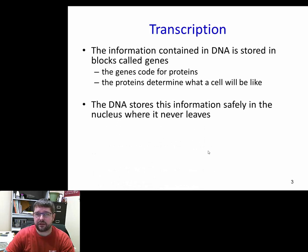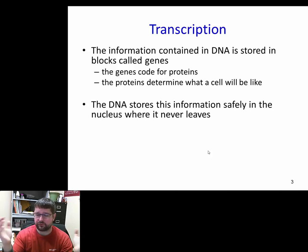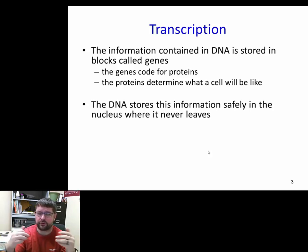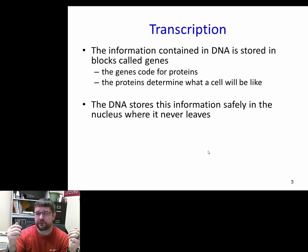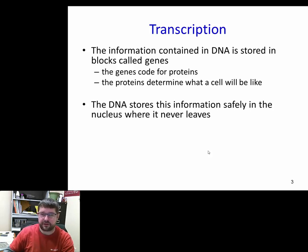DNA is a good storage molecule: it's double-stranded, often associated with proteins, nearly always associated with RNA, housed in its own membrane and separate from the rest of the cell in the nucleus for eukaryotes and the nucleoid region for prokaryotes. It's well protected, not likely to unravel on its own, and it can withstand high and cold temperatures. It never leaves the nucleus if one is present.